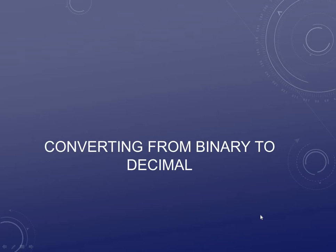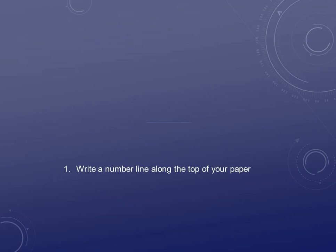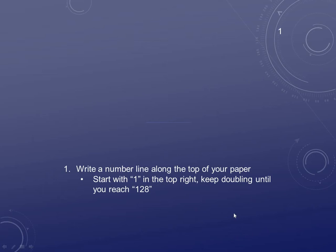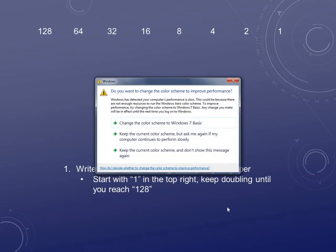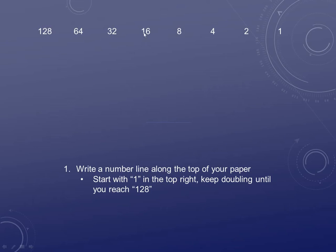First off we're going to convert from binary to decimal. I always do it this way whether I'm doing small or long conversions — especially for certification tests. Write a number line along the top of your paper, start with one and keep doubling the number until you get to 128. IP addresses are 32 bits in length broken up into four octets of eight bits each, so you'll have eight positions: 1, 2, 4, 8, 16, 32, 64, 128.